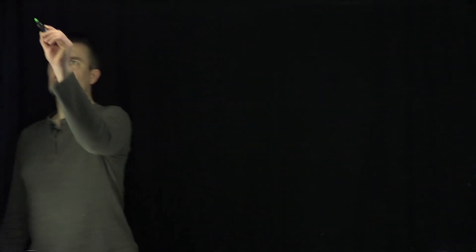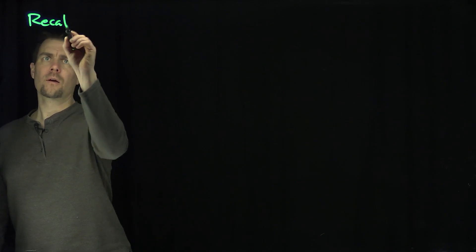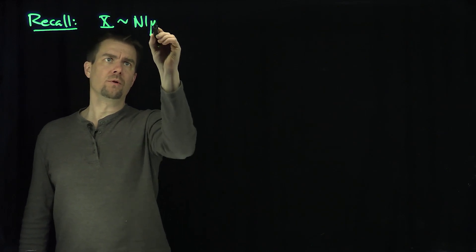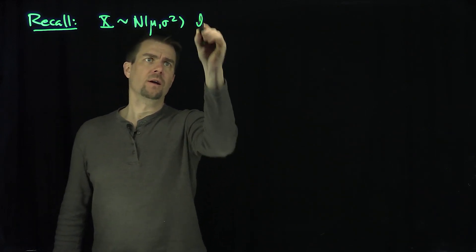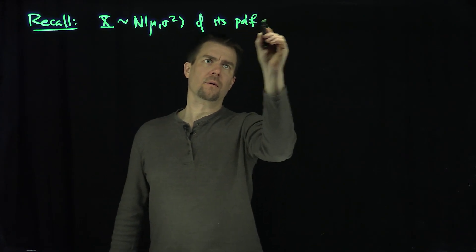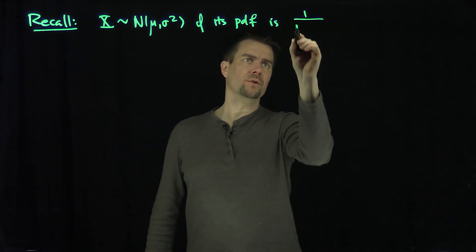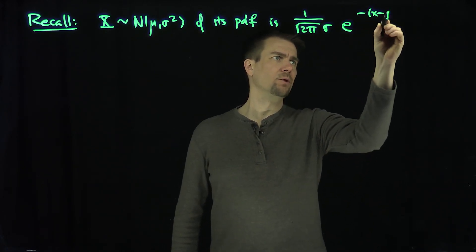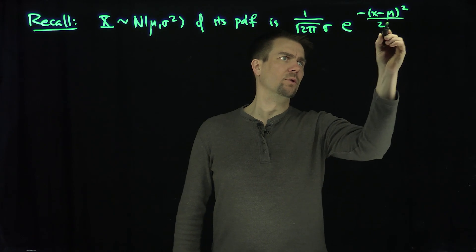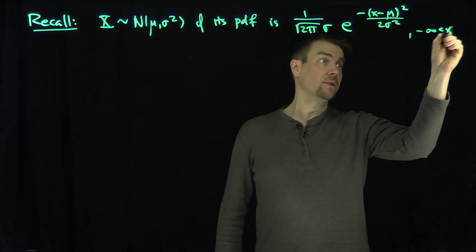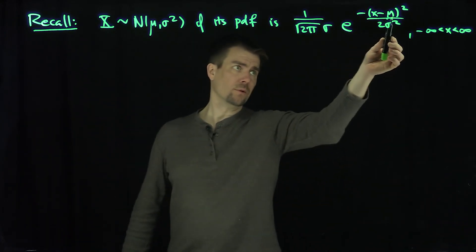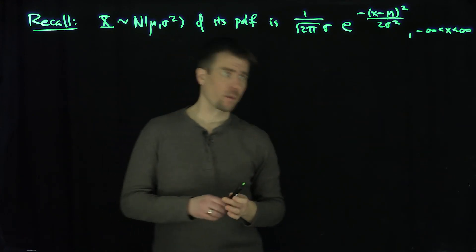Hello, students. In this video, we'll discuss log-normal distributions. Let's recall our common distribution: x is normally distributed with mean mu and variance sigma squared. Its pdf is 1 over the square root of 2 pi sigma, times e to the negative x minus mu squared over 2 sigma squared, valid for all values of x. The mean is equal to mu and the variance is sigma squared.